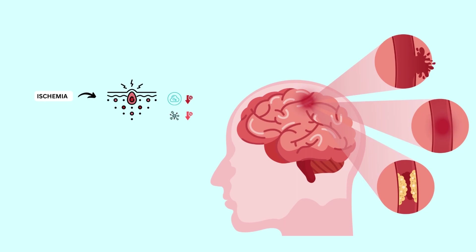A stroke is defined as an abrupt neurological outburst caused by impaired perfusion through the blood vessels to the brain. Understanding neurovascular anatomy is critical for studying the clinical manifestations of stroke.